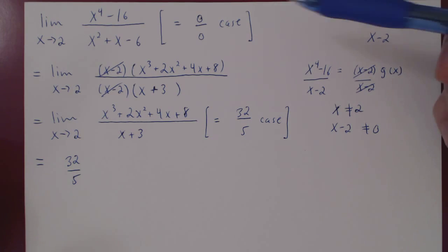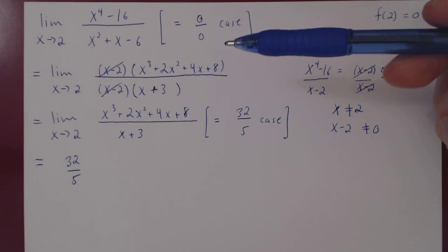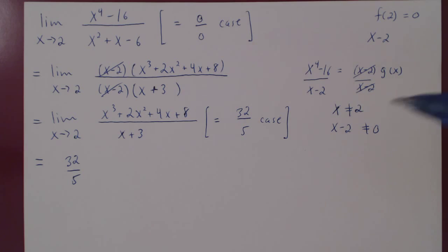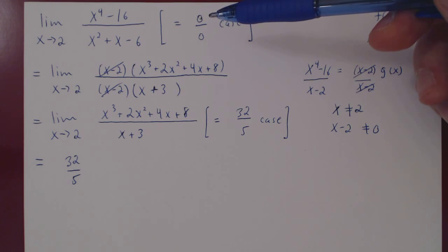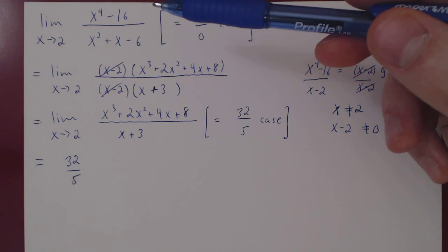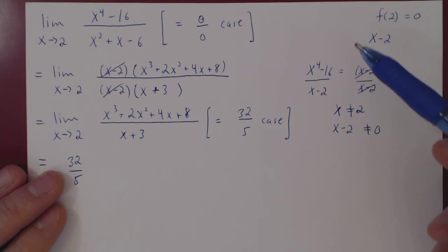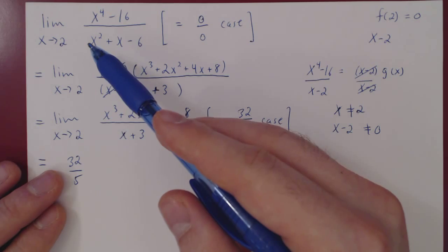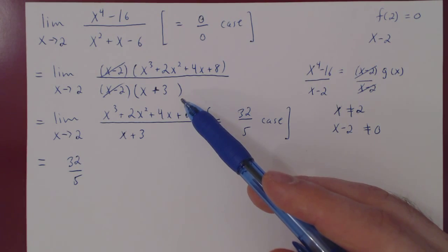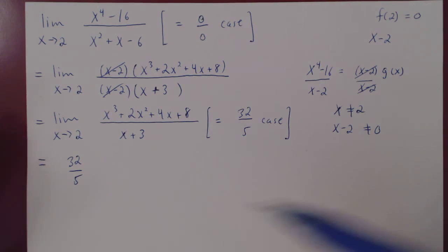You can appreciate how in the first example we had a 0/0 case with final answer -10/11, and in the second example also a 0/0 case with final answer 32/5. Always be careful — when you have an indeterminate 0/0 case, anything can happen. The technique for polynomials: use the zero theorem to get a free factor, then factor by inspection using the sum-product trick for quadratics, or by long division for cubics or higher polynomials.